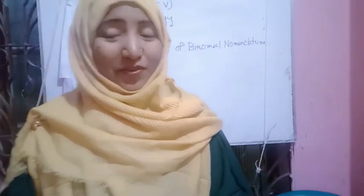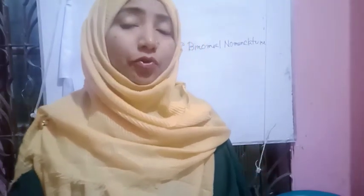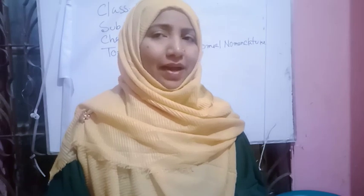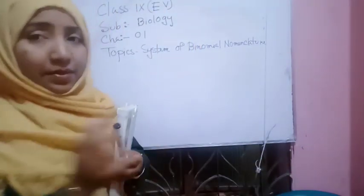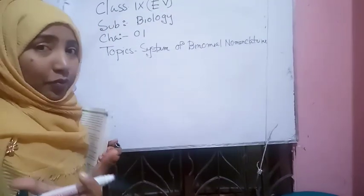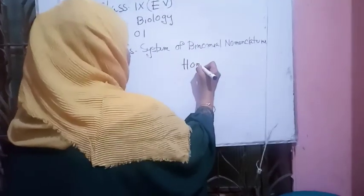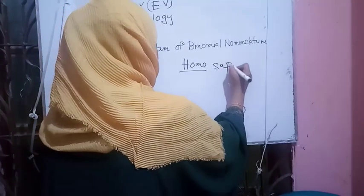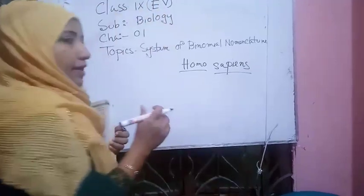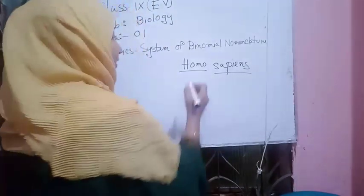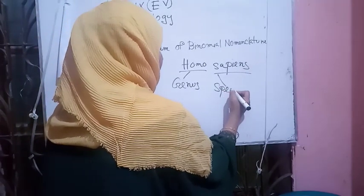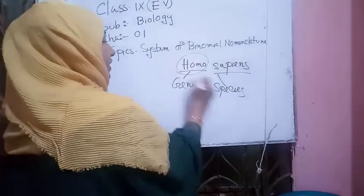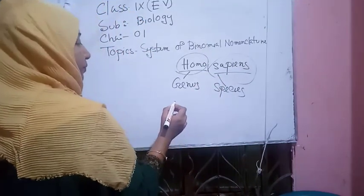My dear students, today our new topic is the system of binomial nomenclature. Binomial means two parts or two structures — one is the genus and the second is the species. For example, the binomial name Homo sapiens: Homo (H-O-M-O) is the genus, and sapiens (S-A-P-I-E-N-S) is the species.